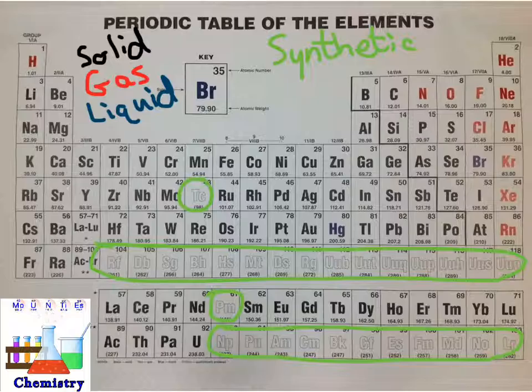All of the other element symbols, regardless of which state of matter they're in — solid, liquid, or gas — if their element symbol is solid and not just an outline, then it is a naturally occurring element.